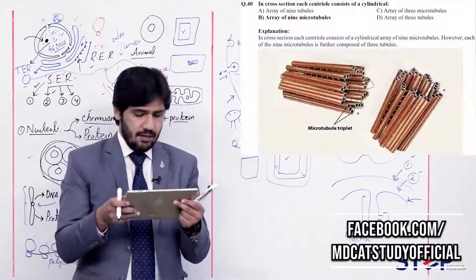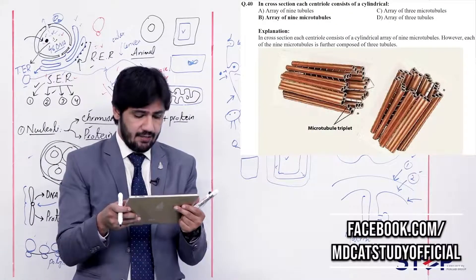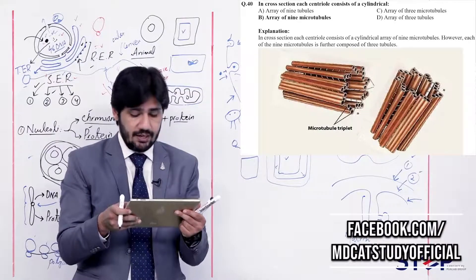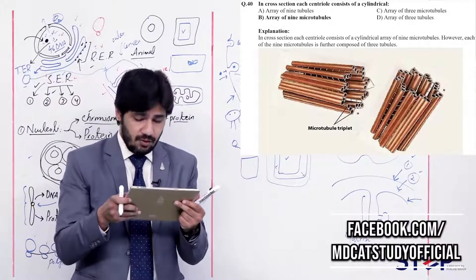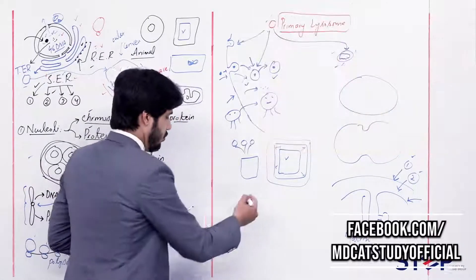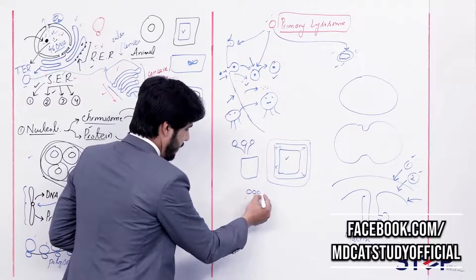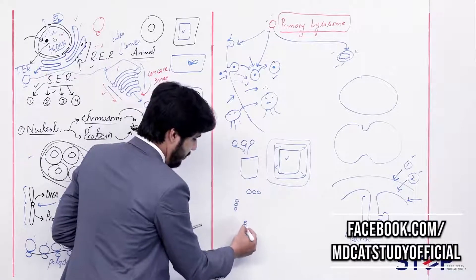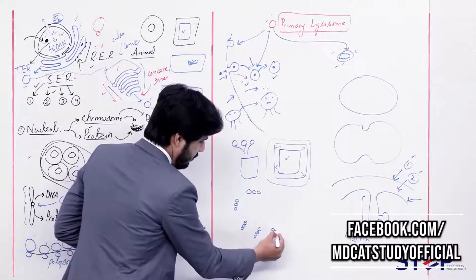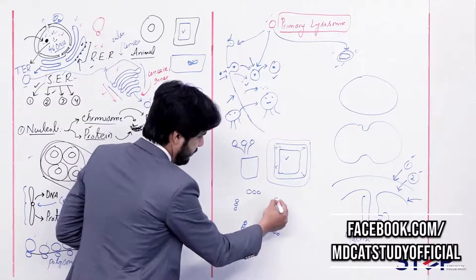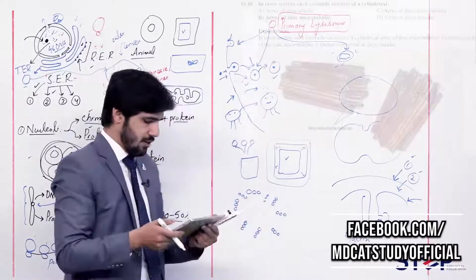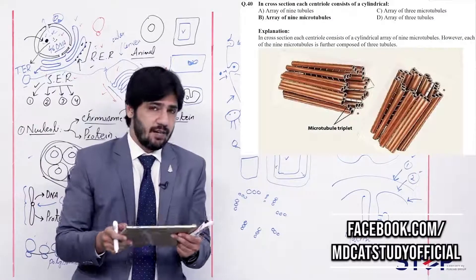Question 40: In cross section, each centriole consists of a cylindrical (alpha) array of 9 tubules, (beta) array of 9 microtubules, (charlie) array of 3 microtubules, (delta) array of 3 tubules. Looking at the centriole, the total arrangement consists of 9 microtubules (1 through 9). So the right answer is beta — array of 9 microtubules.